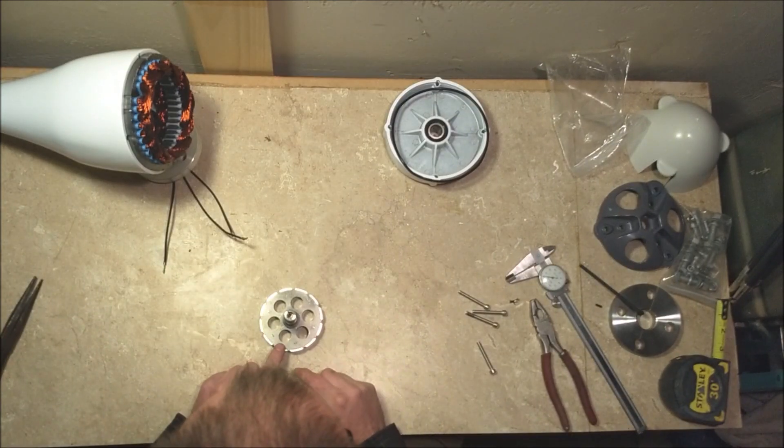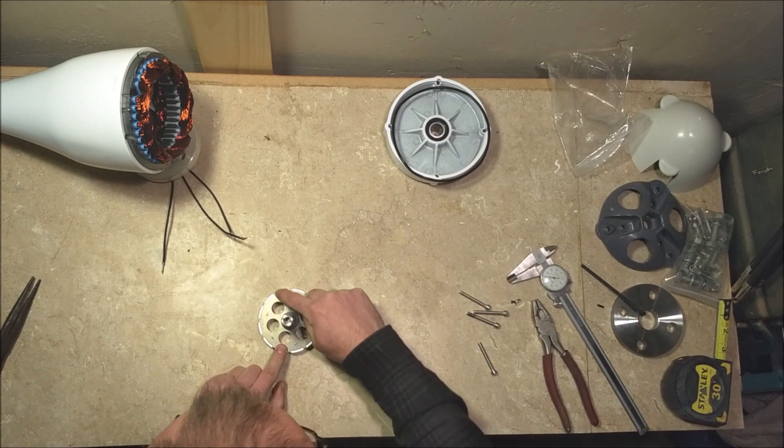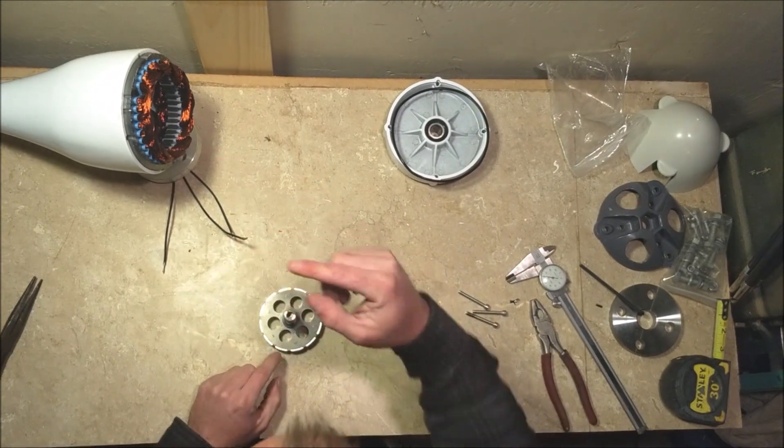The same thing with this rotor. One, two, three, four, five, six, seven, eight, nine, ten, eleven, twelve. Thirty-six coils, twelve poles.